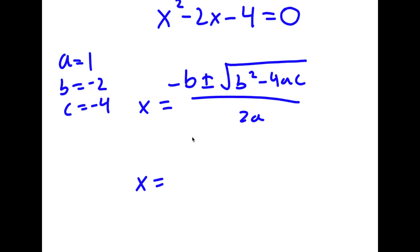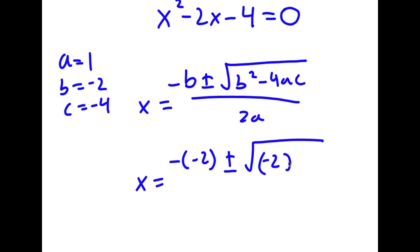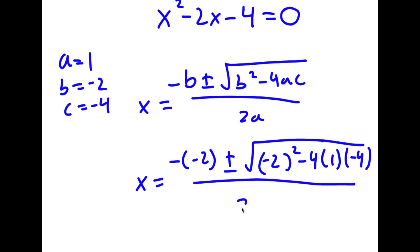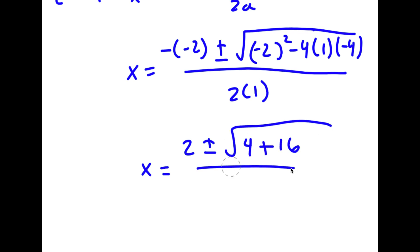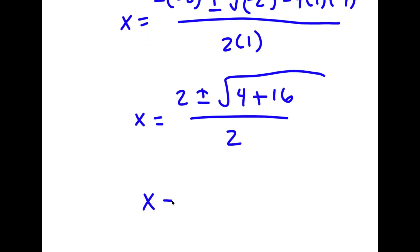So x equals negative of negative 2, plus or minus the square root of negative 2 squared minus 4 times 1 times negative 4, all over 2a. This simplifies to 2 plus or minus the square root of 4 plus 16, all over 2, which equals 2 plus or minus the square root of 20, over 2.